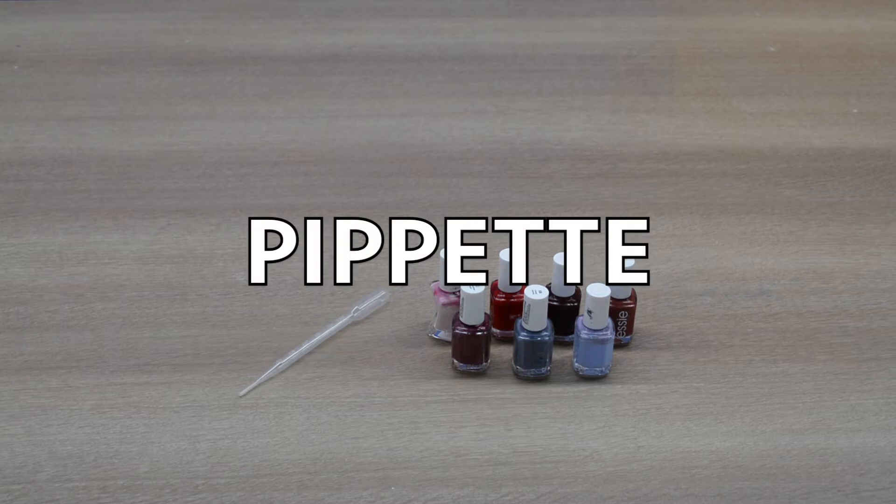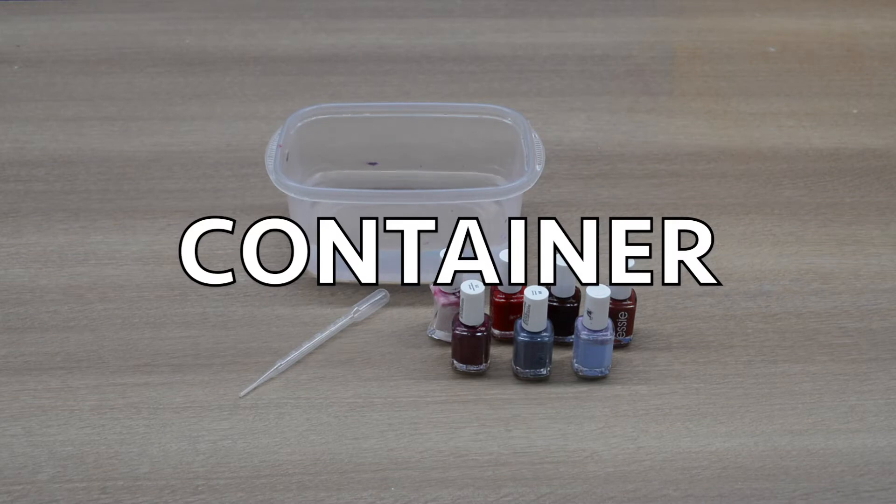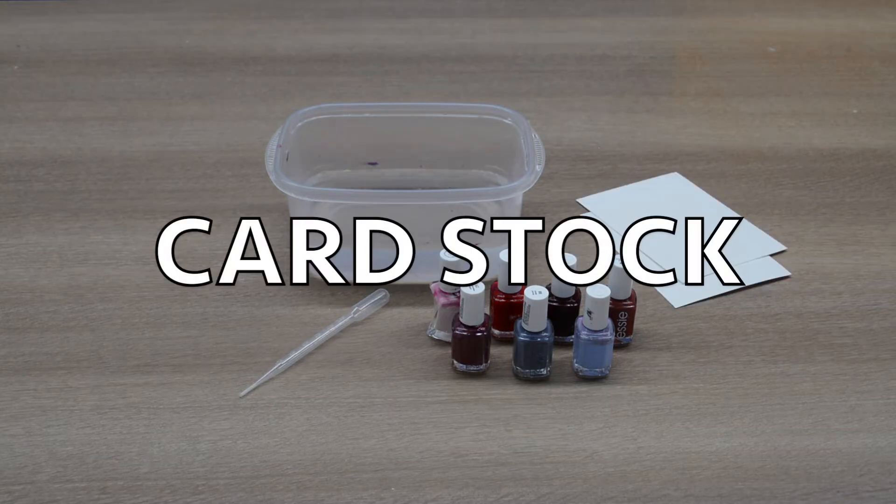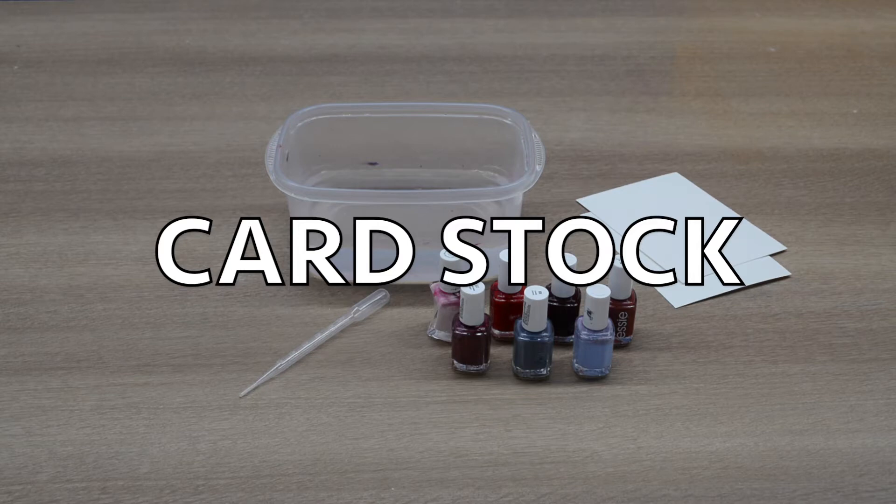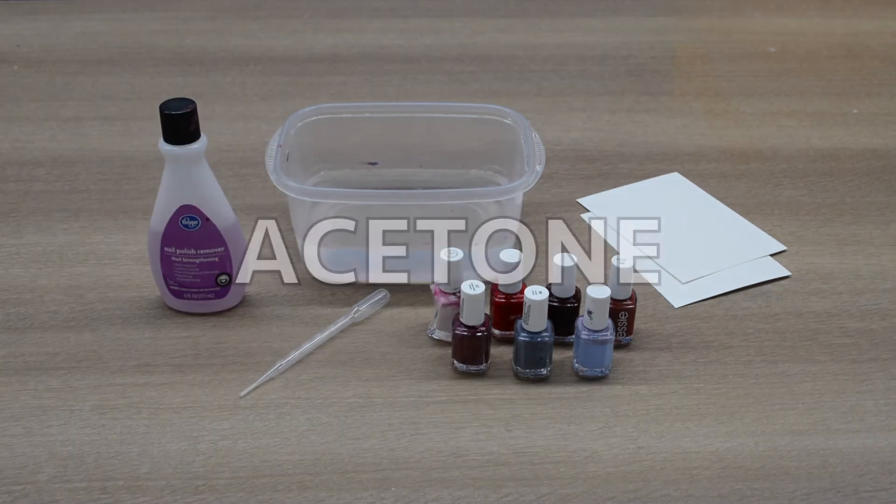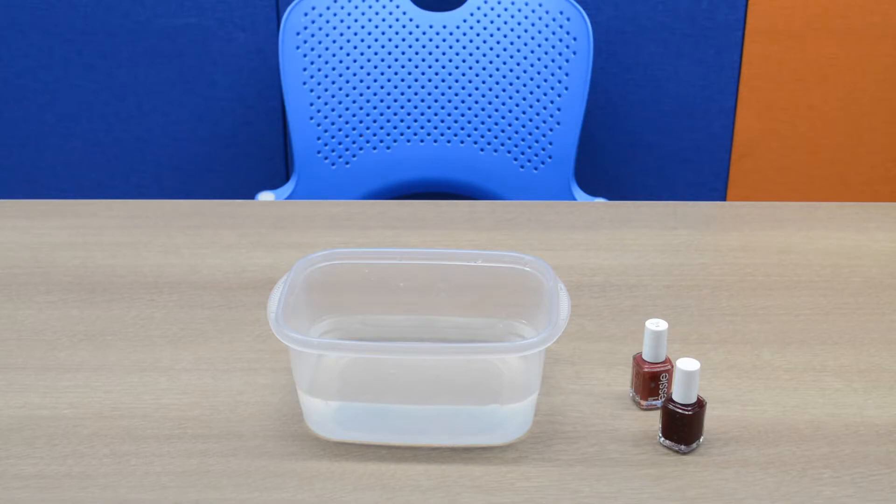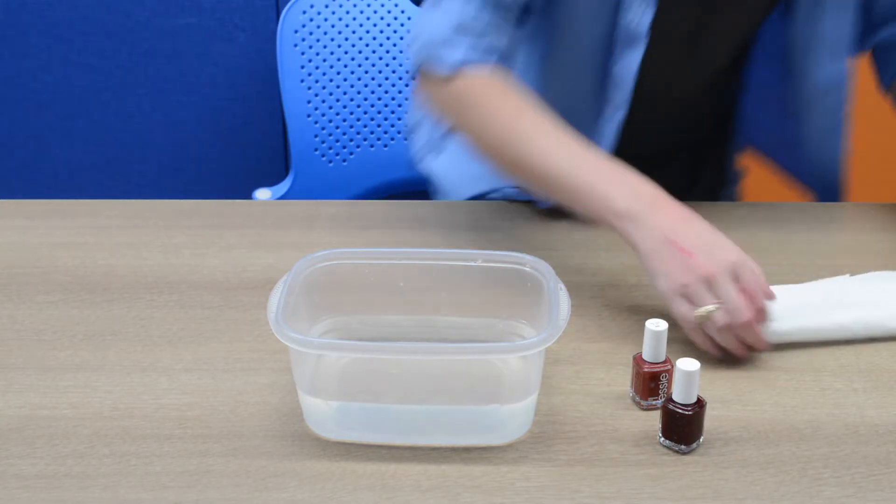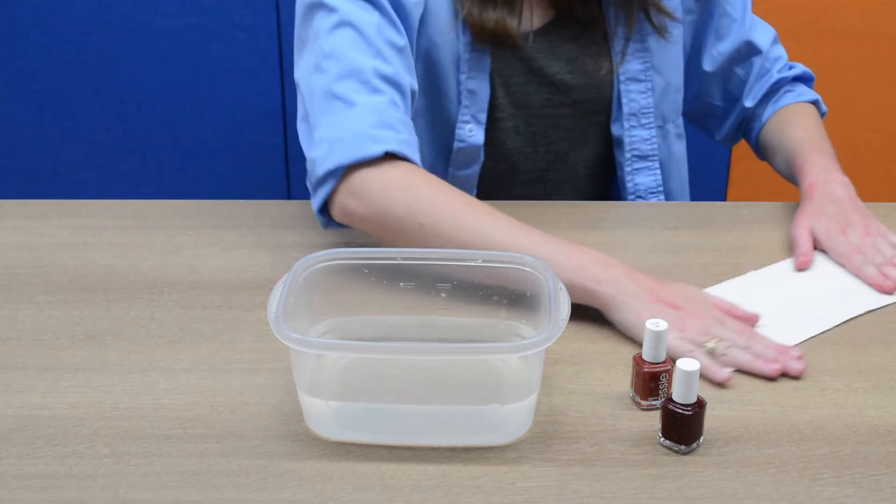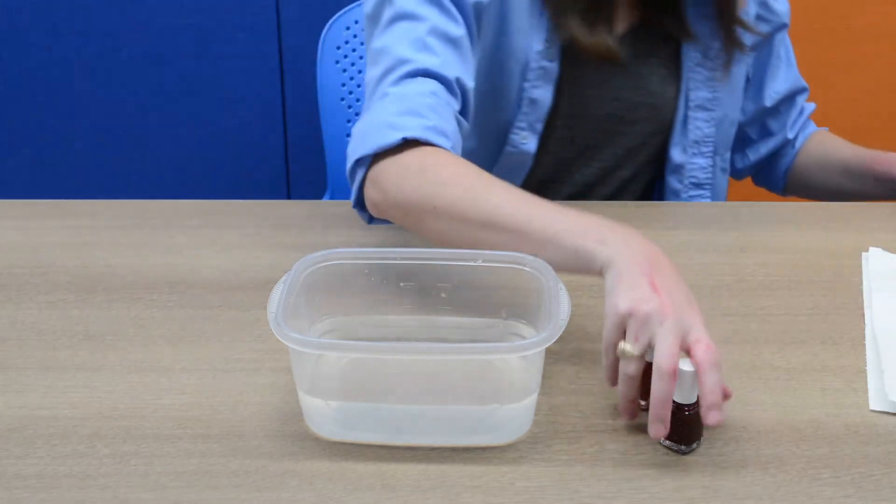You will also need a pipette. Don't worry, there's an alternative solution if you don't have one of these though. A bowl, pan, or Tupperware that you are fine getting messy because it won't likely look the same again, filled about halfway with room temperature water. Card stock or thick paper of some kind, acetone, and some paper towels. And just to let you know, your fingernails will get a little messy, so avoid doing this project if you just got a fresh mani.